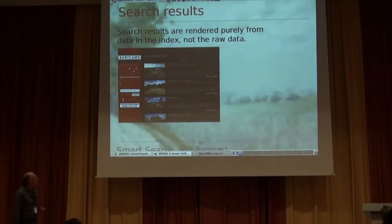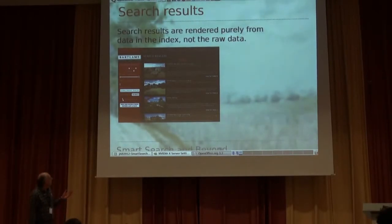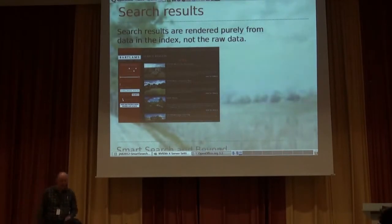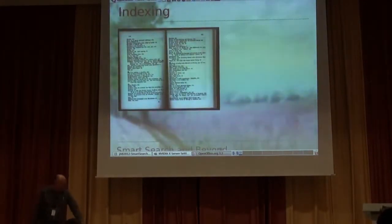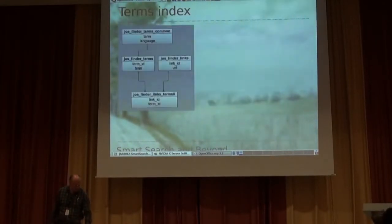This is another example — another estate agency site using Finder. The thing to note is that all the data you can see there — like the image, the address of the property, the property details — that information is actually stored in the index. It's coming from the index, not from the property database itself. You only get to the property database when you click on a link.